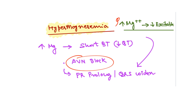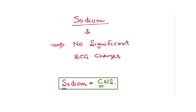Coming to sodium and its effect on ECG: there is no clinically significant effect of sodium on ECG, because sodium mainly affects the CNS. You can remember this as sodium and CNS — S and C sound similar. So sodium affects CNS, and the ECG changes are predominantly driven by potassium and calcium.